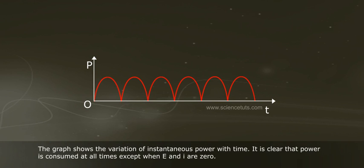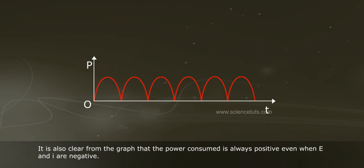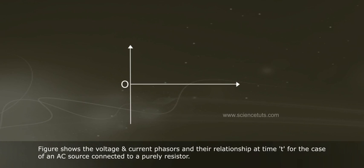The graph shows the variation of instantaneous power with time. It is clear that power is consumed at all times except when e and i are zero. It is also clear from the graph that the power consumed is always positive even when e and i are negative.